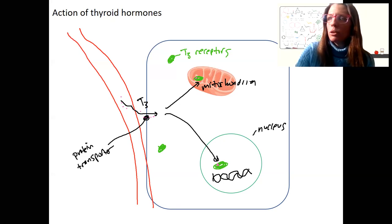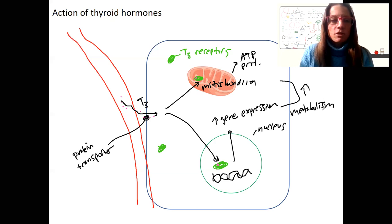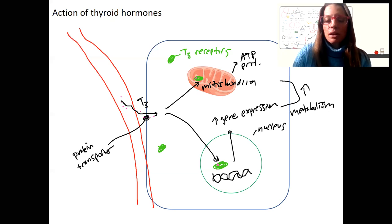So that action could be to increase ATP production. It could be to increase gene expression, probably metabolic proteins. The result of all this is increased metabolism. And it's going to warm up your body. And that's through mitochondrial effects as well as changes in gene expression.